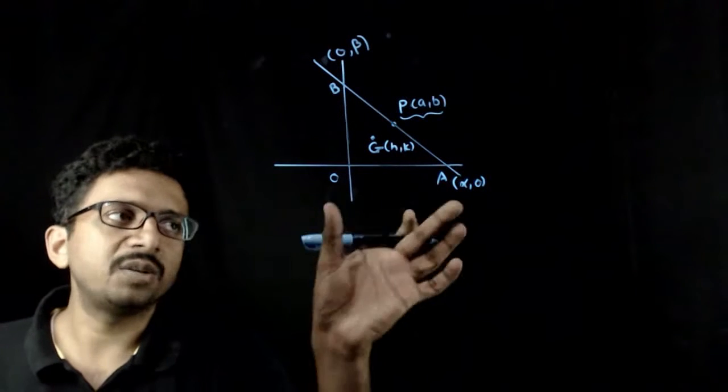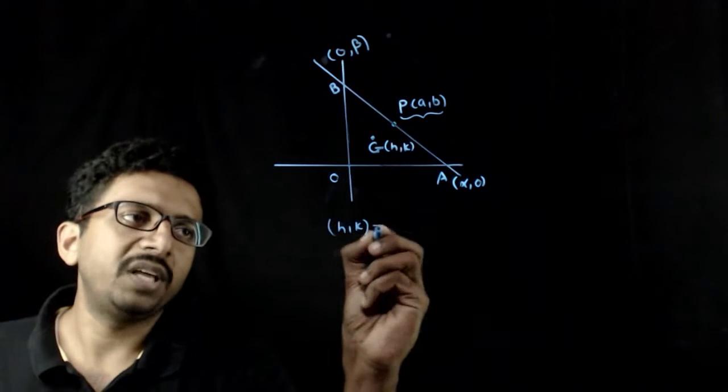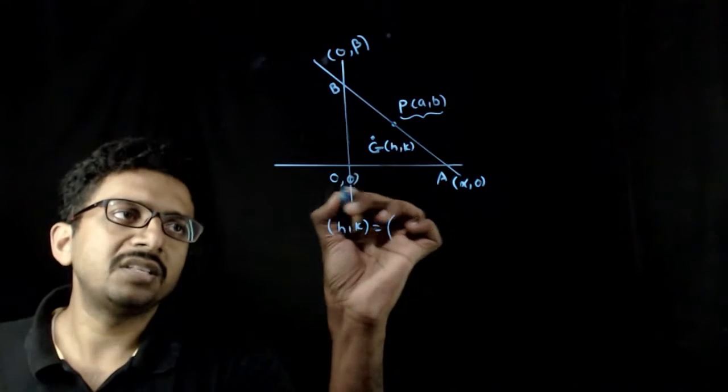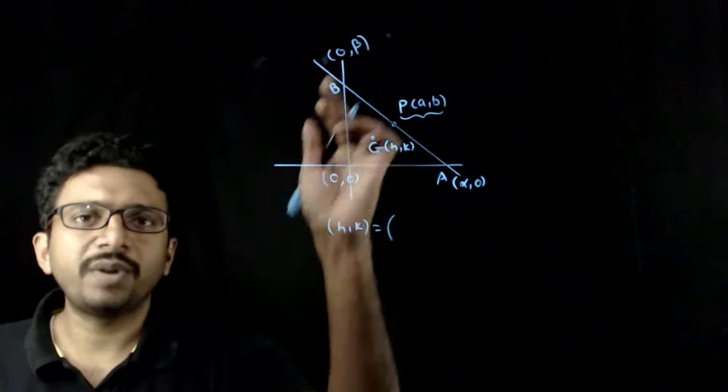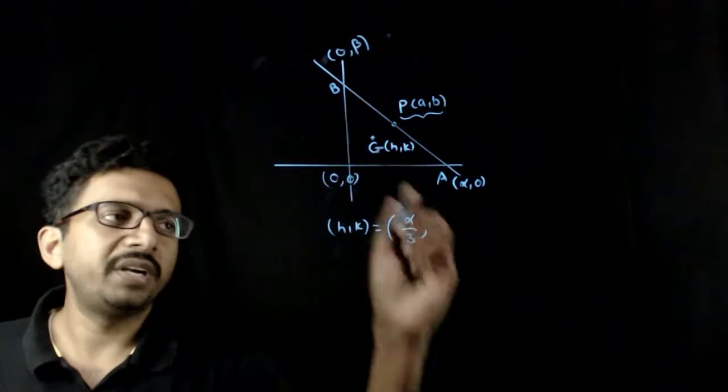Now H comma K has to be centroid of triangle OAB. So, H comma K should be equal to alpha, origin is 0 comma 0, alpha plus 0 plus 0 by 3, alpha by 3, 0 plus 0 plus beta by 3.